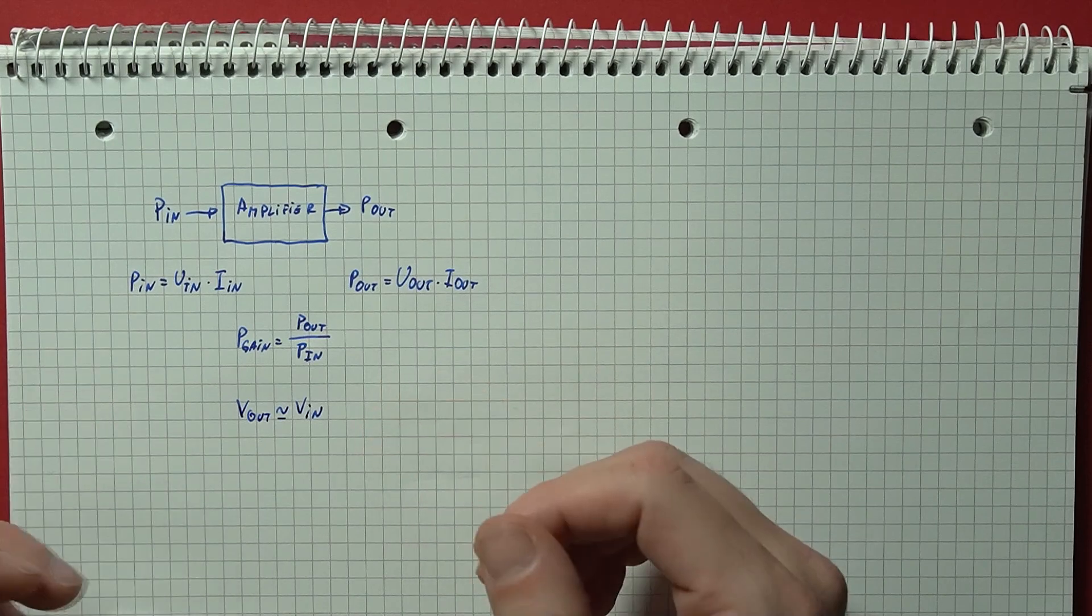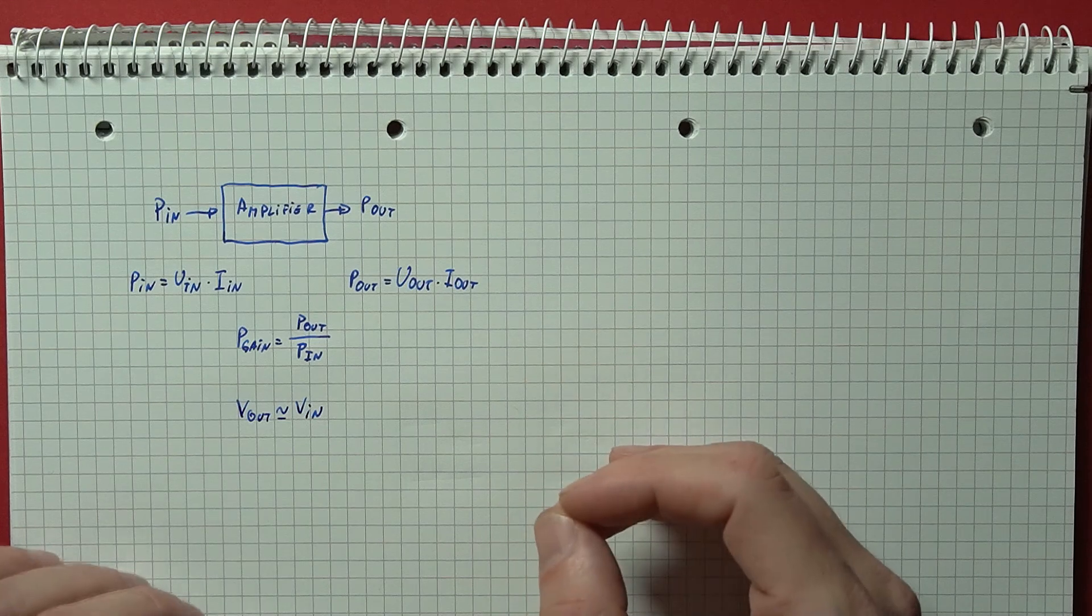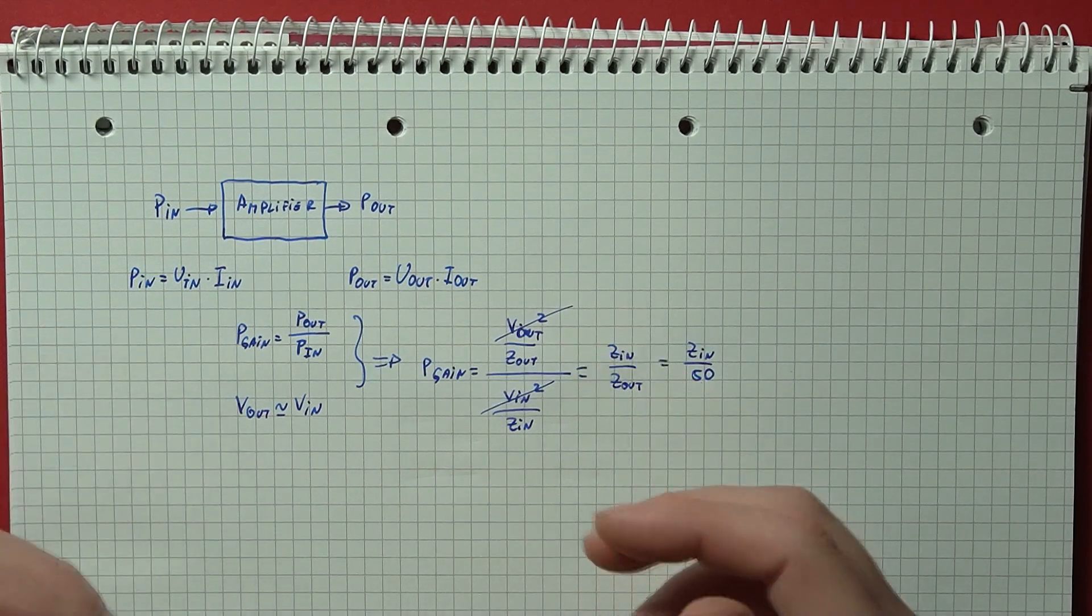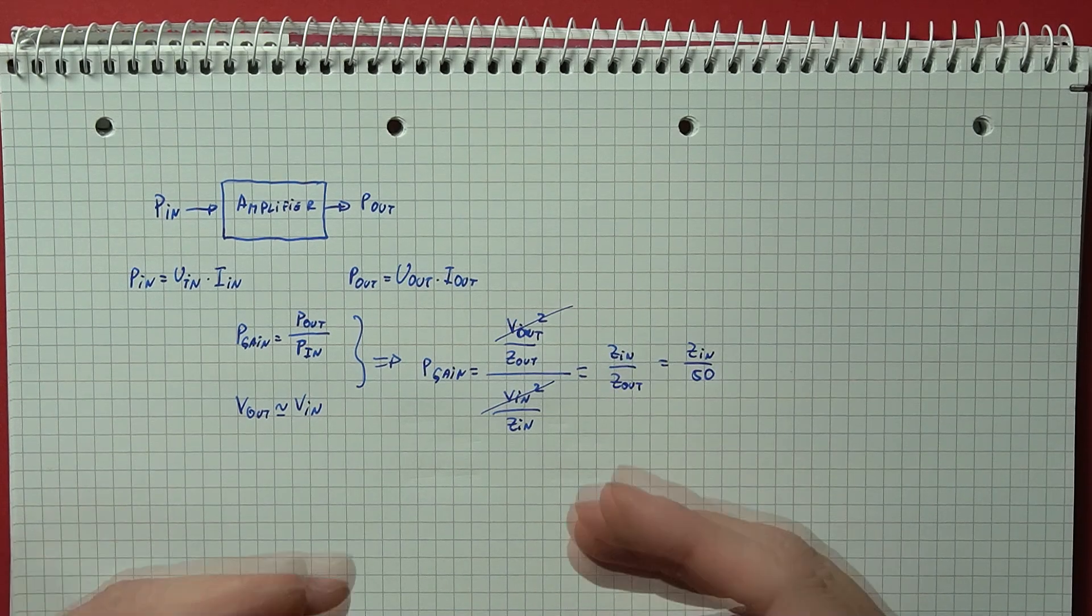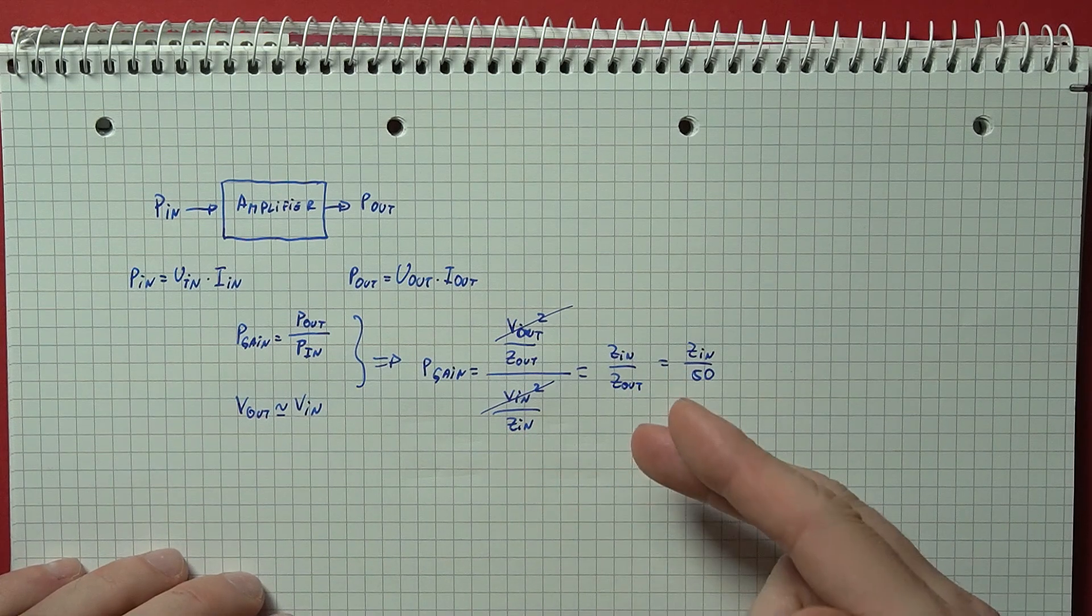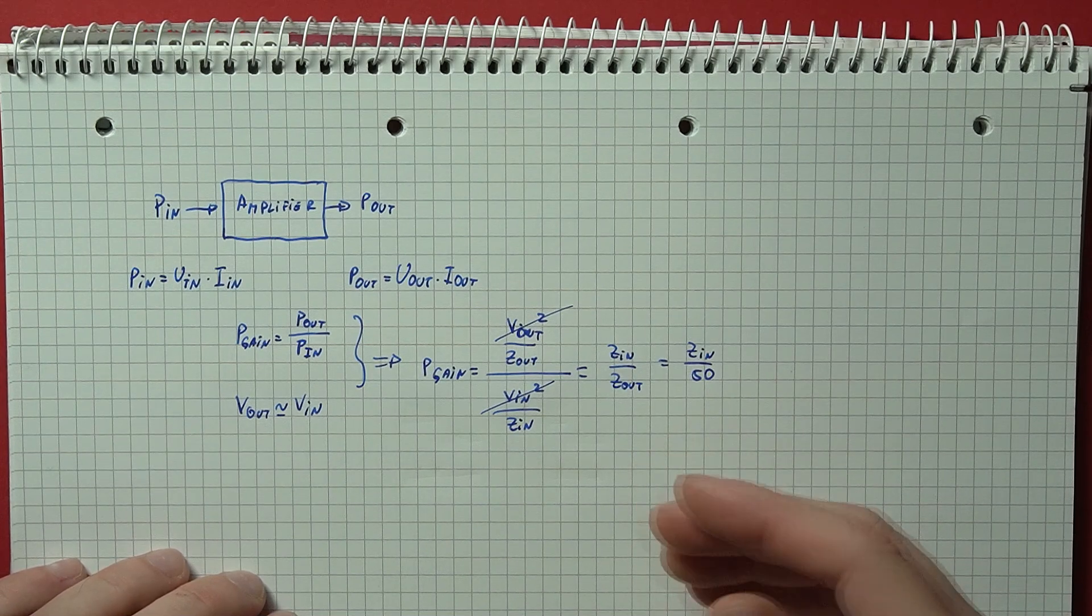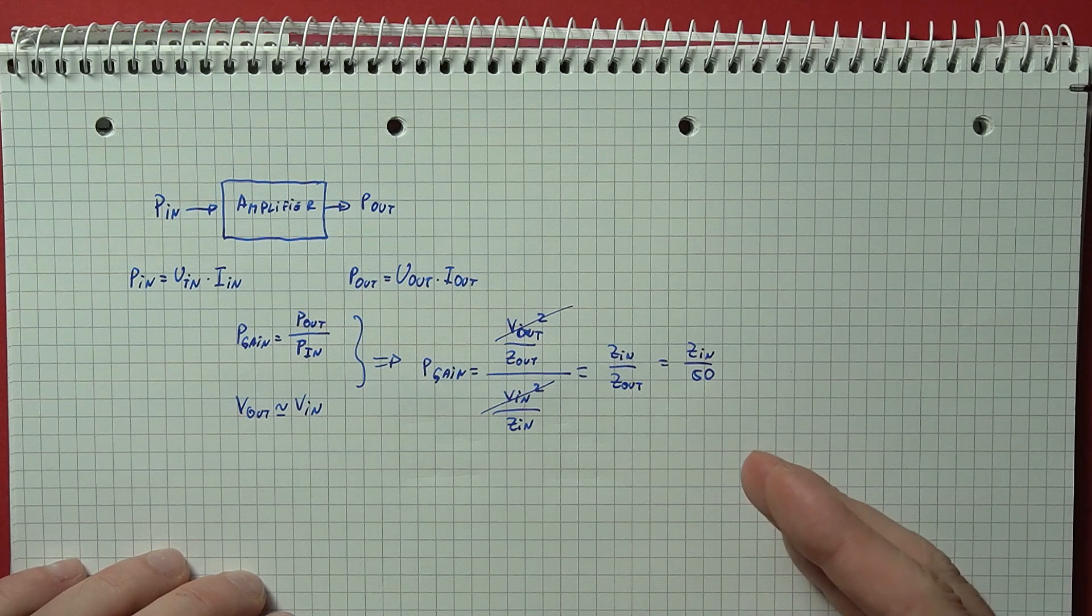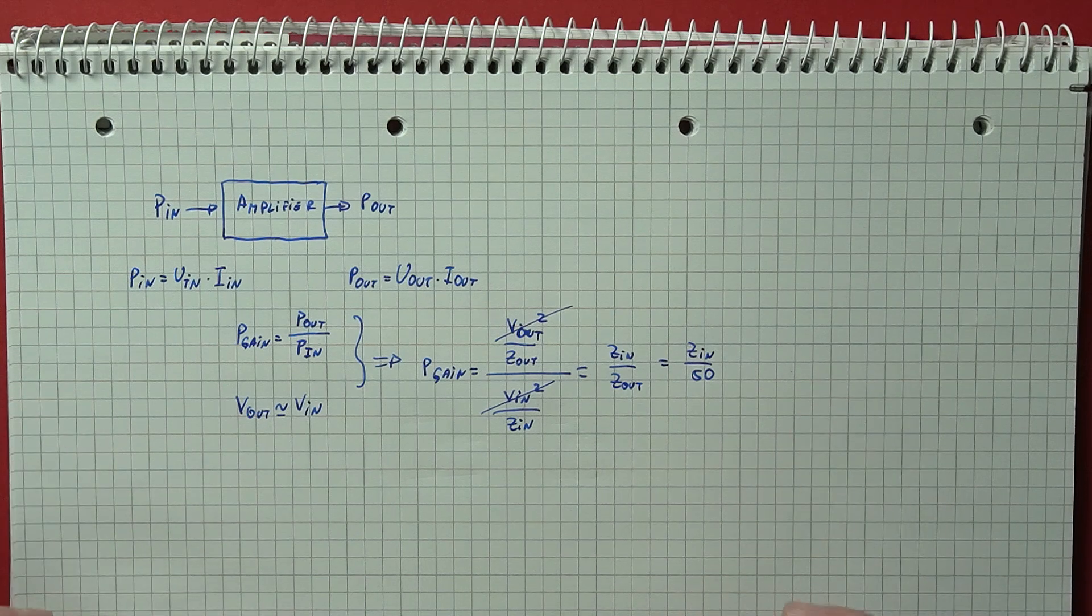Since the voltage gain is more or less 1, the input voltage is more or less equal to the output voltage. We can write the power as the voltage squared divided by the impedance, and since the two voltages are more or less equal, we can rewrite the power gain as the ratio of input impedance to output load, which in our case is 50 ohms. If we divide the input impedance by 50, or whatever output load is present, we should get the power gain of the amplifier.